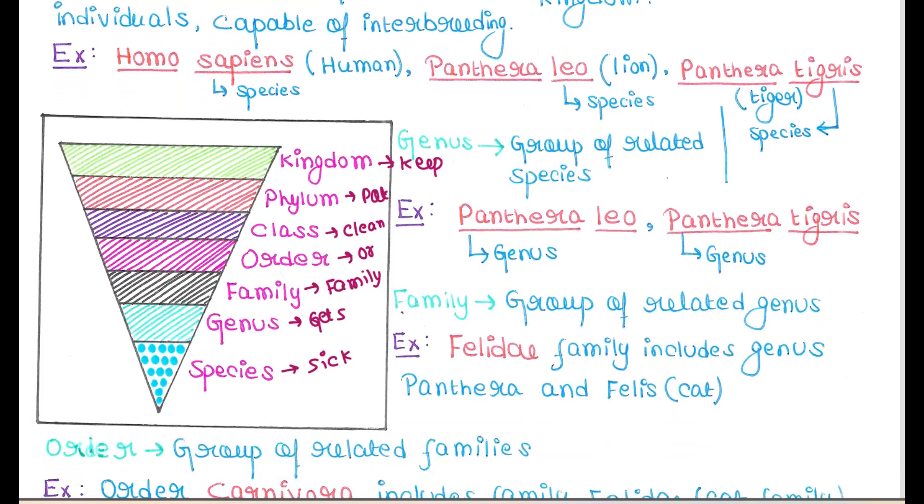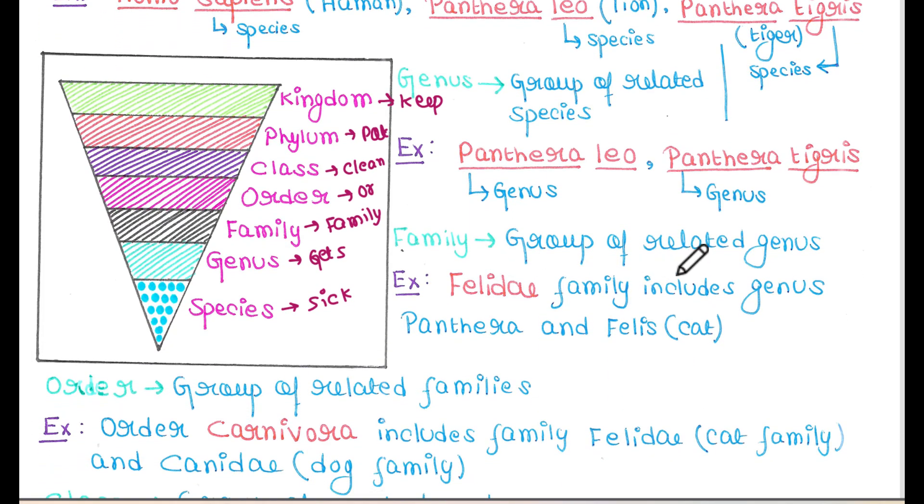Next is family. A group of related genus is called family. For example, Felidae family includes genus Panthera and Felis. Panthera includes tigers, lions, etc., and Felis is cats. So Felidae family includes both genus Panthera and Felis.